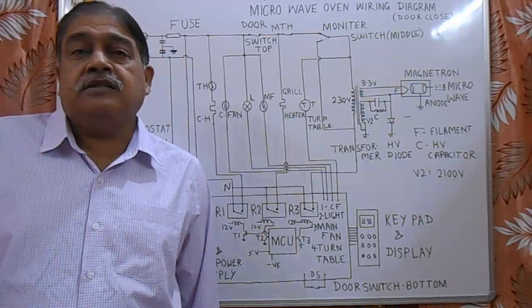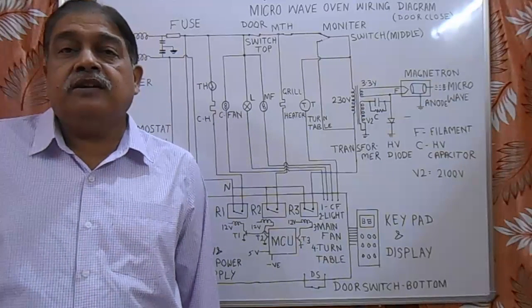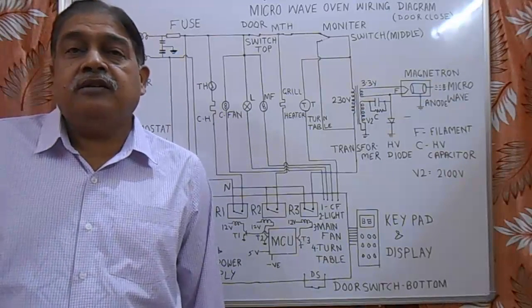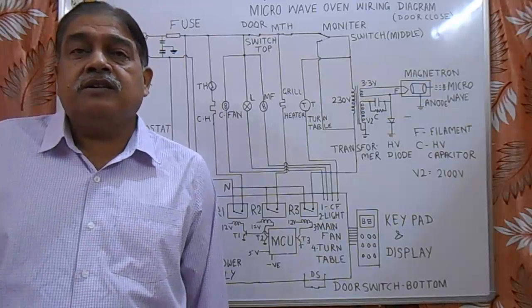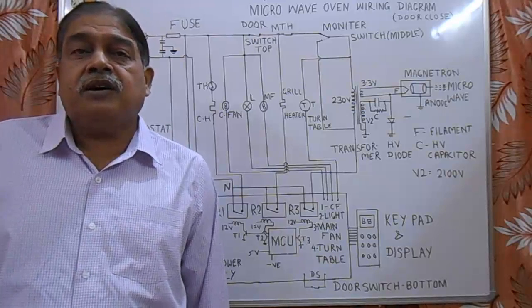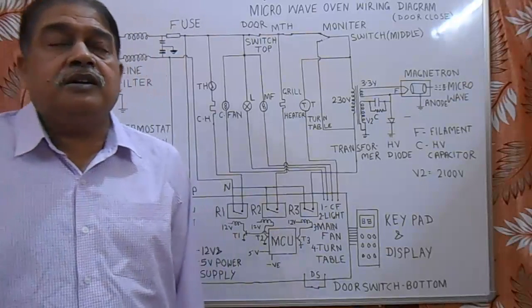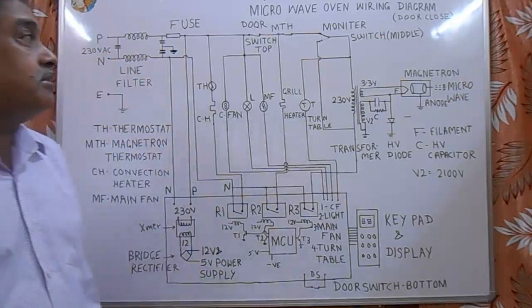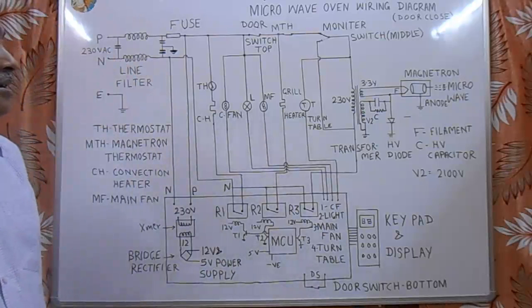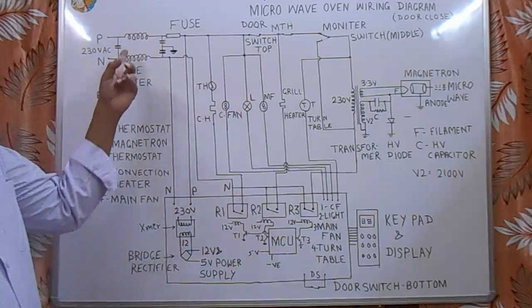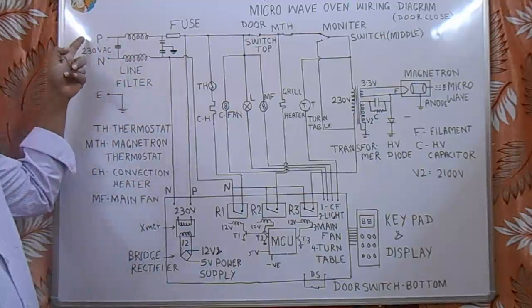Dear friends, good morning. Welcome to my channel. Today's topic is circuit diagram of microwave oven. In this diagram, I have done complete circuit diagram of microwave oven. Here first thing is line filter. Here we give 230 volt supply and there are two coils and two capacitors.